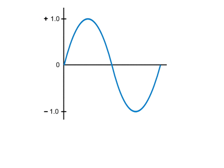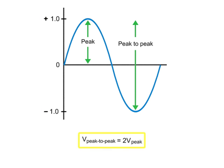The peak-to-peak value is measured from the negative aspect of the waveform to the positive aspect. In symmetrical waveforms, the peak-to-peak value is twice the peak value.